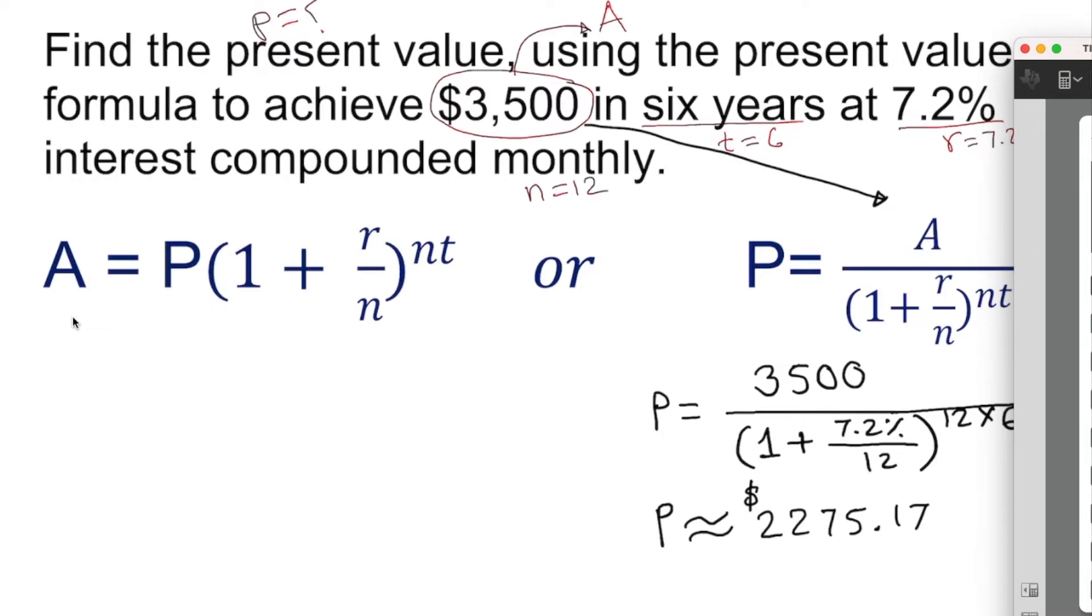Let's work it out on the other side. A is given as $3500, which is the total amount. Principal we have no idea, we're figuring out. 1 plus r which is 7.2% over n which is 12, to the power 12 times the year which is 6. We have that now.